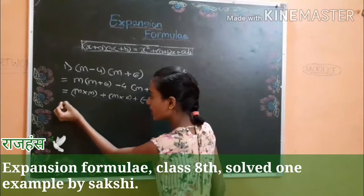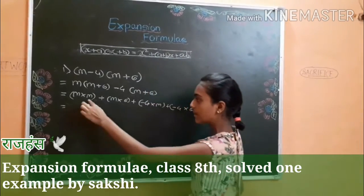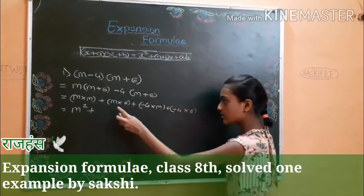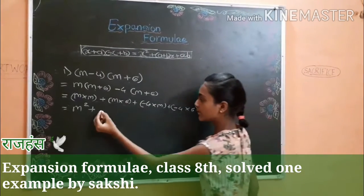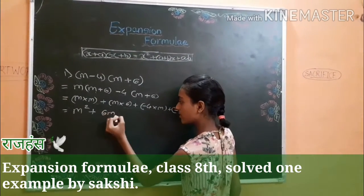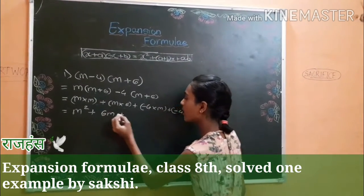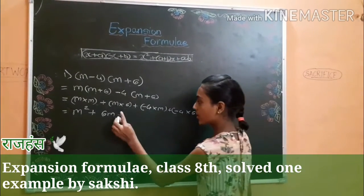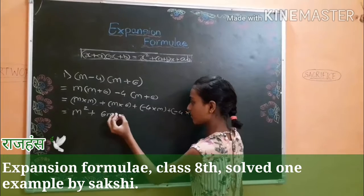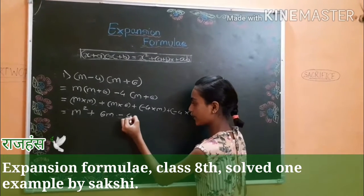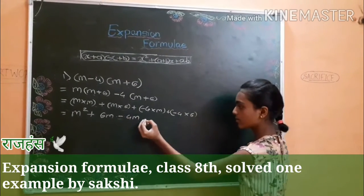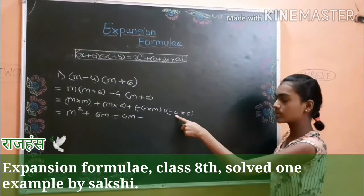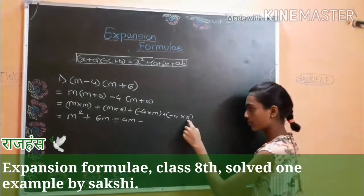Let's solve it. m multiply by m is equal to m square. Plus m multiply by 6 is equal to 6m. Plus minus 4 multiply by m is equal to 4m. Plus 4 multiply by 6 is equal to 24.